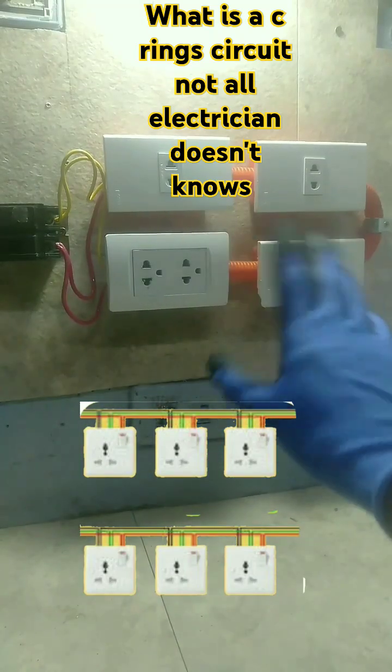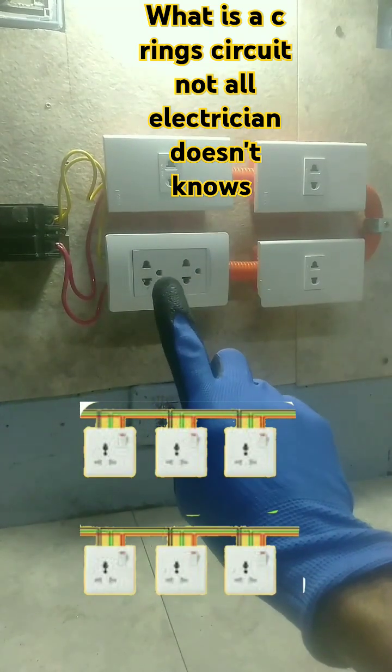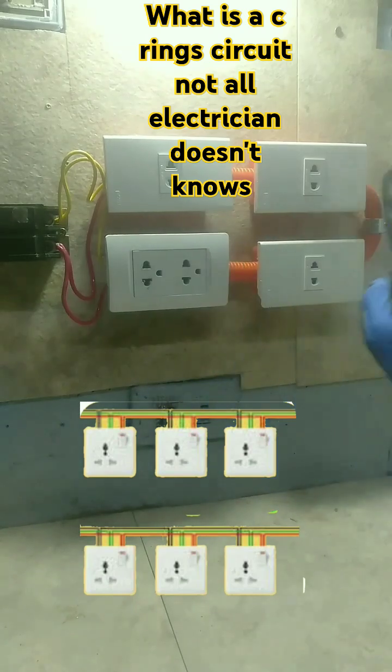How it works: The benefit of this type of wiring is that if one side of the ring fails, the others still have a power supply.